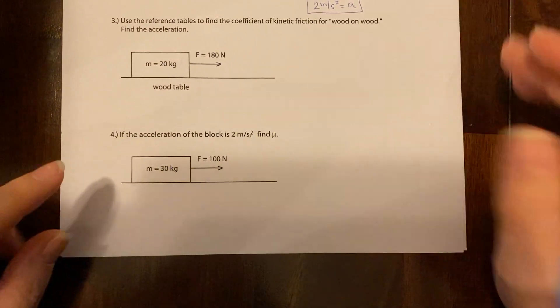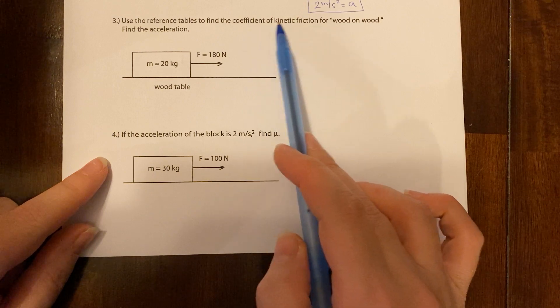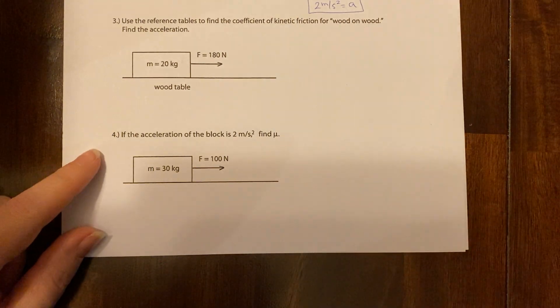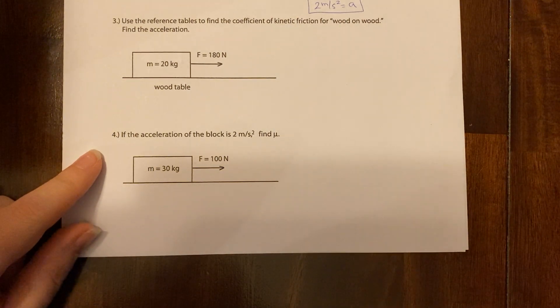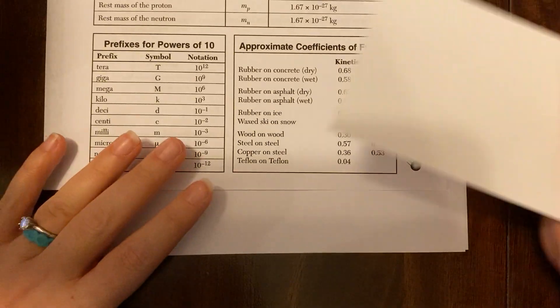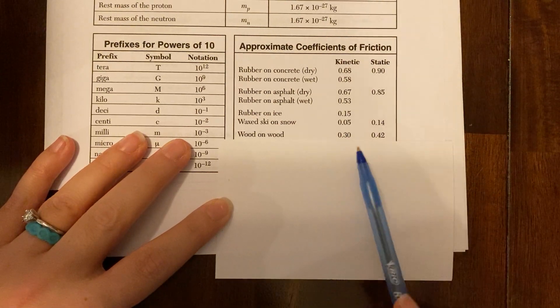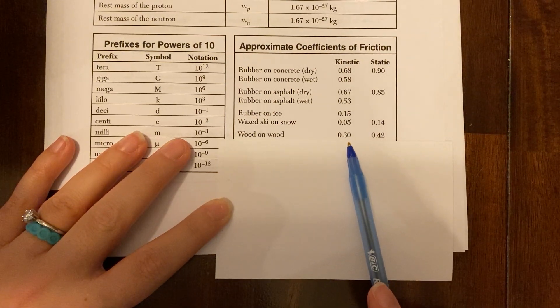Now, these two here should be no problem except for the fact that you need to use your reference tables to find the coefficient of kinetic friction for wood-on-wood. Lucky for you, I happen to have the reference table here. We're looking for wood-on-wood. And you're looking for the coefficient of kinetic friction, or 0.3.